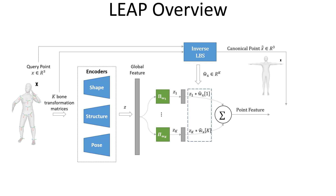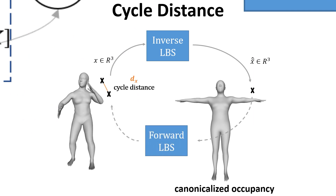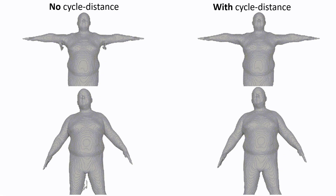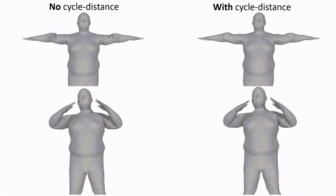These sparse weights are used to create a local point feature vector as a weighted average of the bone features. Lastly, an occupancy multilayer perceptron predicts whether the query point is located inside the human geometry by taking as input the estimated canonical point, the associated local point feature vector, and an additional feature based on a cycle distance. For this, we introduce another linear blend skinning network that maps the estimated canonical point back to the posed space, defining a cycle as the distance between this new point and the corresponding input query point. The cycle distance benefits the generalization of our method and produces significantly fewer artifacts.